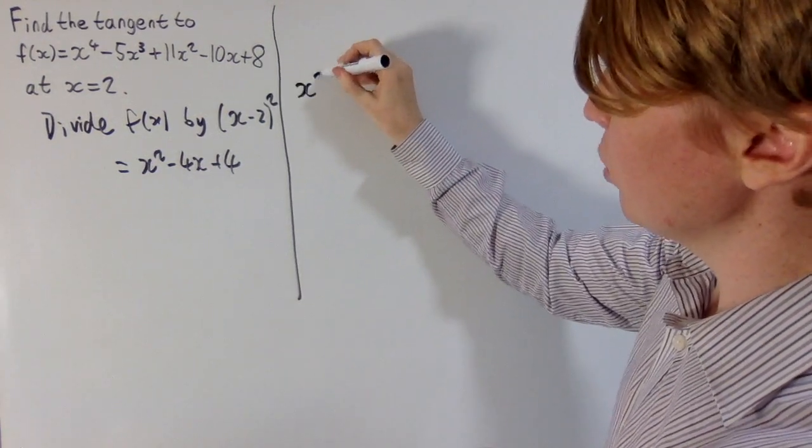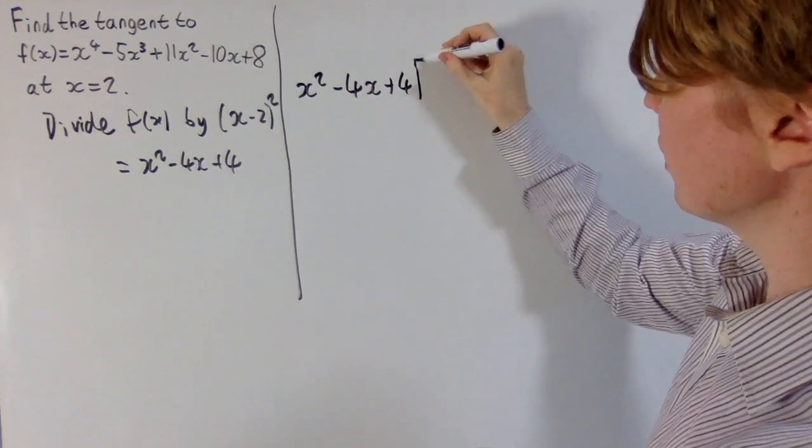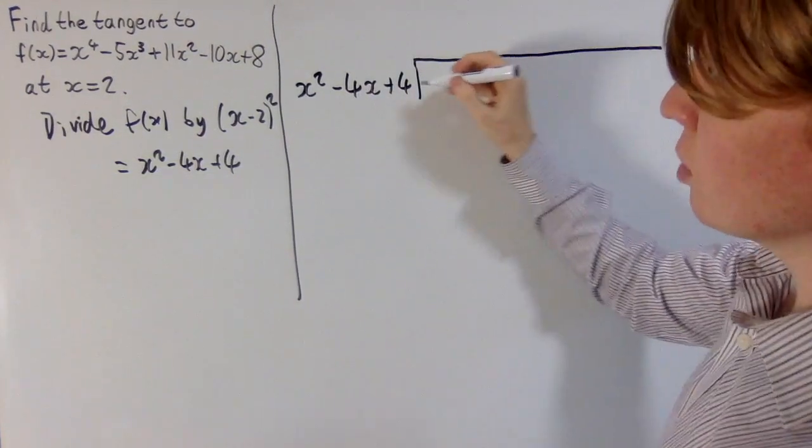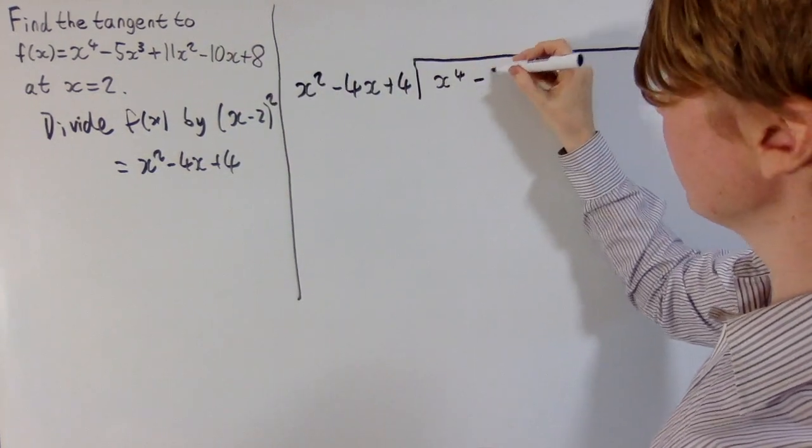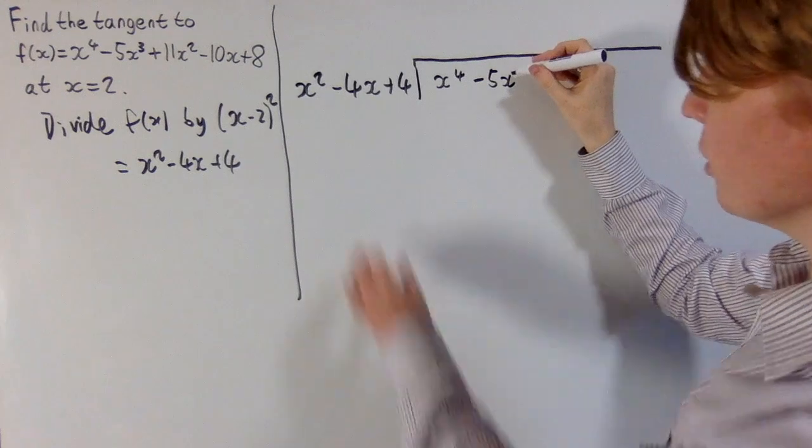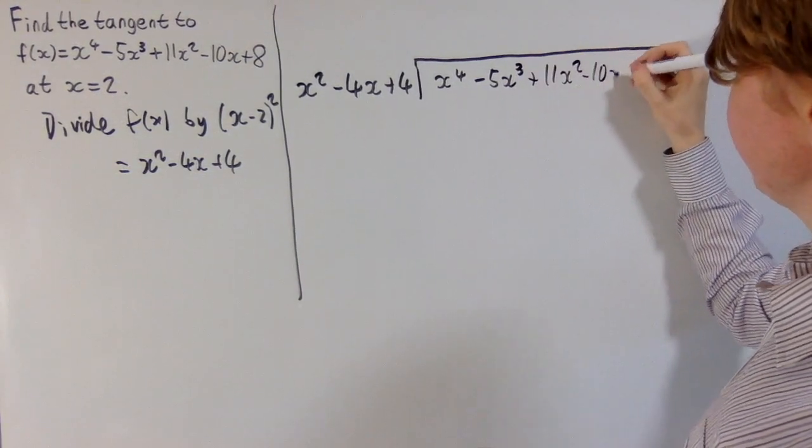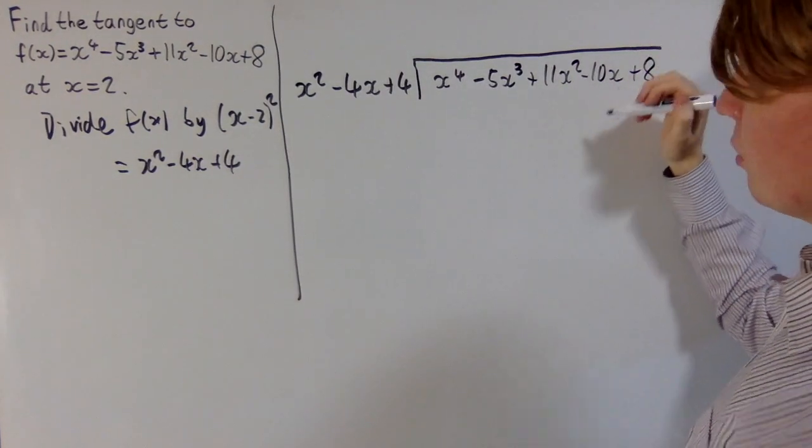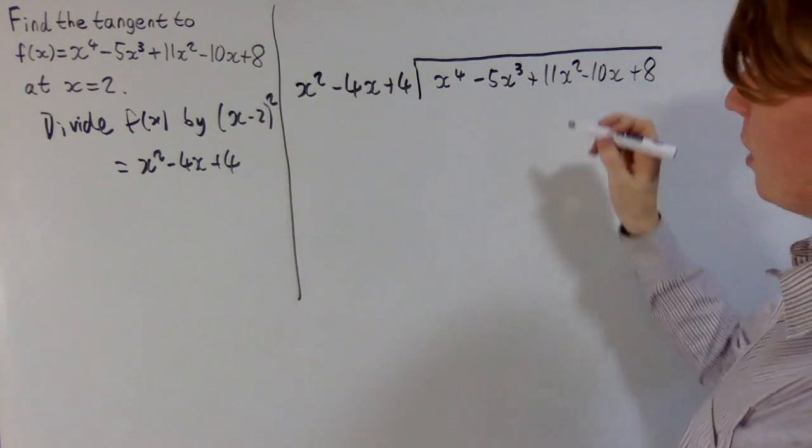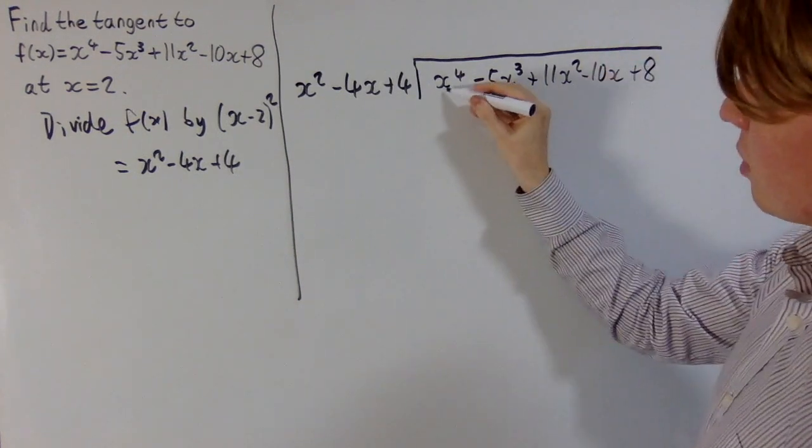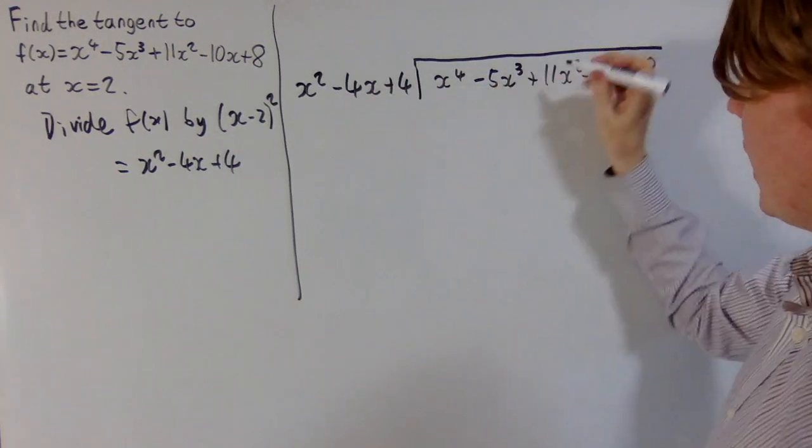So let's just get set up, we're going to be dividing by x squared minus 4x plus 4, so that goes on the outside, and then we just need to copy out f of x into here, and then we're going to take away different multiples of this term so that it will match up. So the very first thing we do, this is degree 4, this is degree 2, so we need to multiply by some number times x squared so that it matches up with our x to the 4, so all we need to do is multiply all of this by x squared.